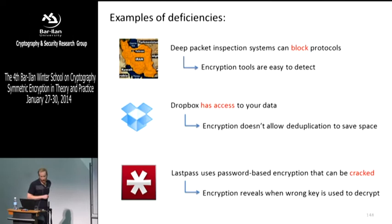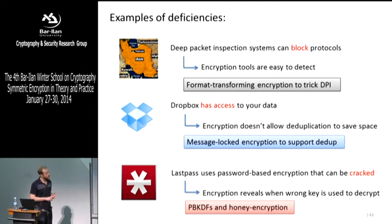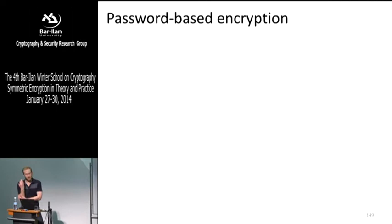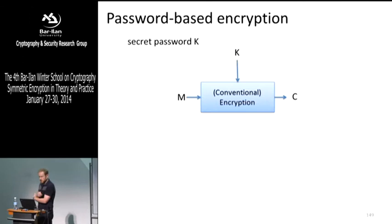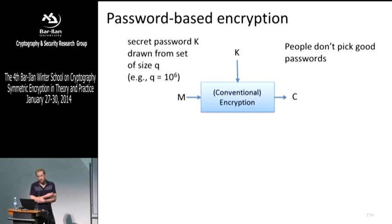We're going to try and deal with each of these things piecemeal — using new encryption goals to deal with these types of issues — which means we have to not only change definitions but also change constructions. Let's start with password-based encryption. Normally we have conventional encryption with keys, but people don't pick good keys — they pick passwords and they pick them poorly. We can imagine people are drawing from a set of passwords that's something like 10 to the 6.